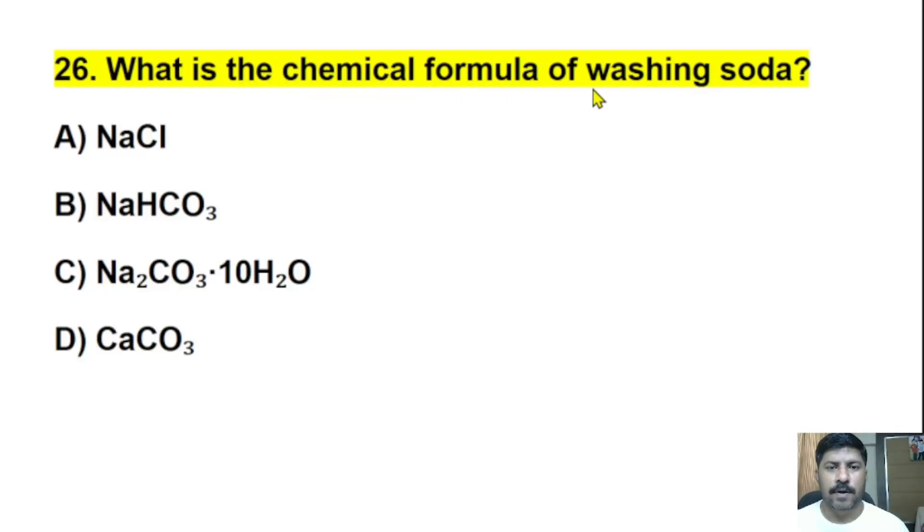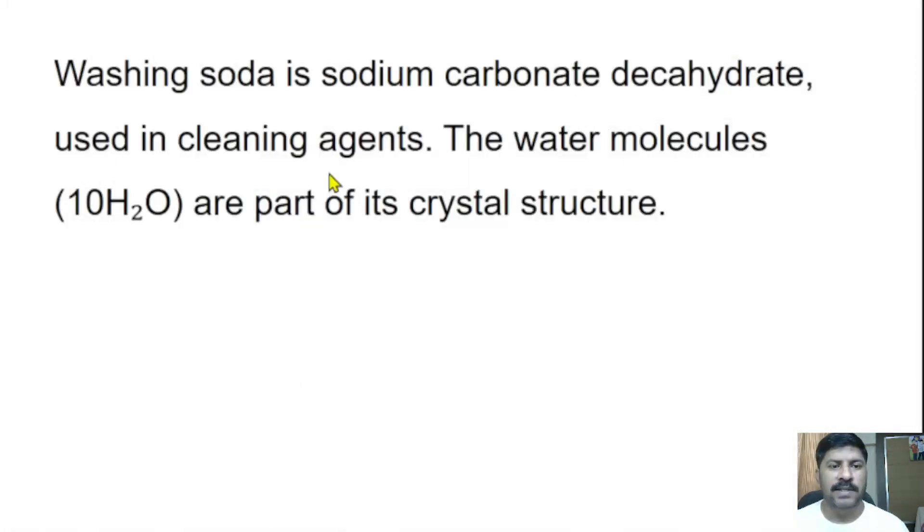Twenty-sixth question: What is the chemical formula of washing soda? NaCl, NaHCO3, Na2CO3·10H2O, or CaCO3? The correct answer is Na2CO3·10H2O. NaCl is sodium chloride, NaHCO3 is sodium bicarbonate, and CaCO3 is calcium carbonate. Washing soda is sodium carbonate decahydrate used in cleaning agents. The water molecules, 10H2O, are part of its crystal structure.